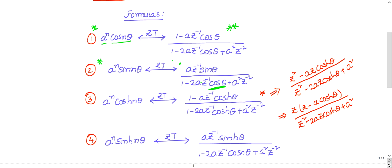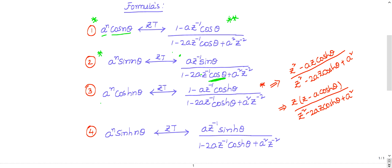If you can remember formulas 1 and 2, formulas 3 and 4 follow automatically. For a^n·cosh(nθ): Formula 3 is (1 − a·Z⁻¹·coshθ)/(1 − 2a·Z⁻¹·coshθ + a²·Z⁻²). For a^n·sinh(nθ): Formula 4 is a·Z⁻¹·sinh(θ)/(1 − 2a·Z⁻¹·coshθ + a²·Z⁻²). Formulas 3 and 4 are replicas of 1 and 2 with cosθ replaced by coshθ and sinθ replaced by sinhθ. Importantly, the denominators always contain cosθ or coshθ — no sinθ or sinhθ in the denominators.